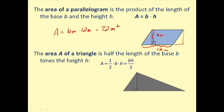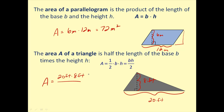Next, we have the area of a triangle. The area is half the length of the base times the height, or base times height divided by 2. Remember, dividing by 2 is the same as multiplying by one-half. If the base is 20 feet and the height is 8 feet, the area equals base times height divided by 2, which equals 80 square feet.